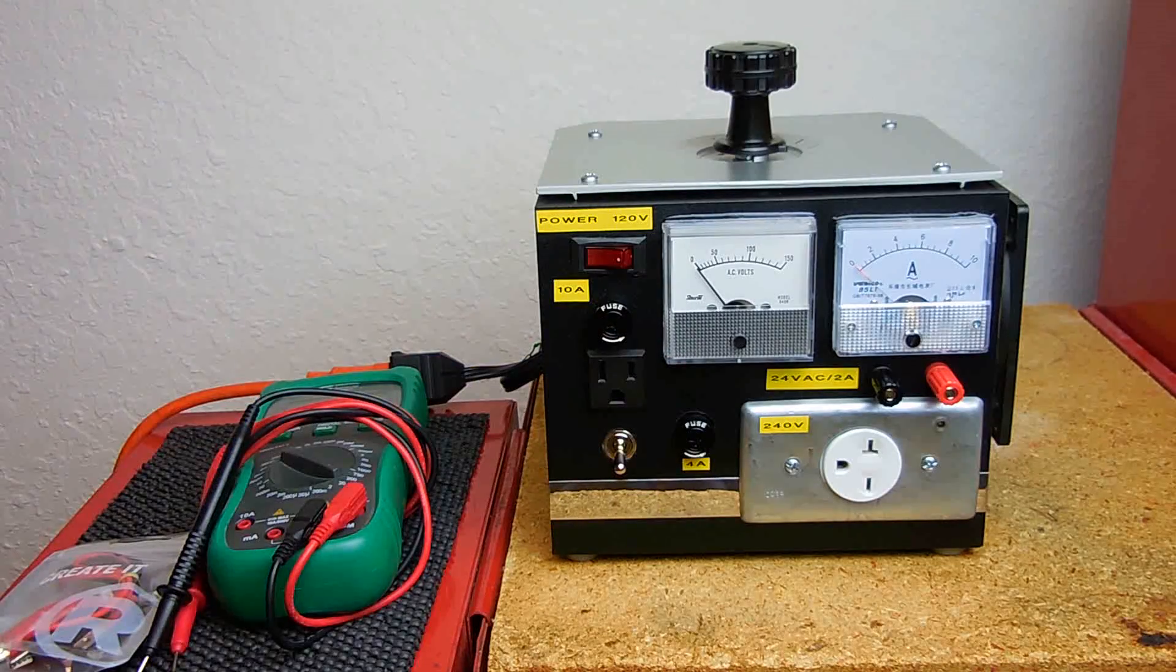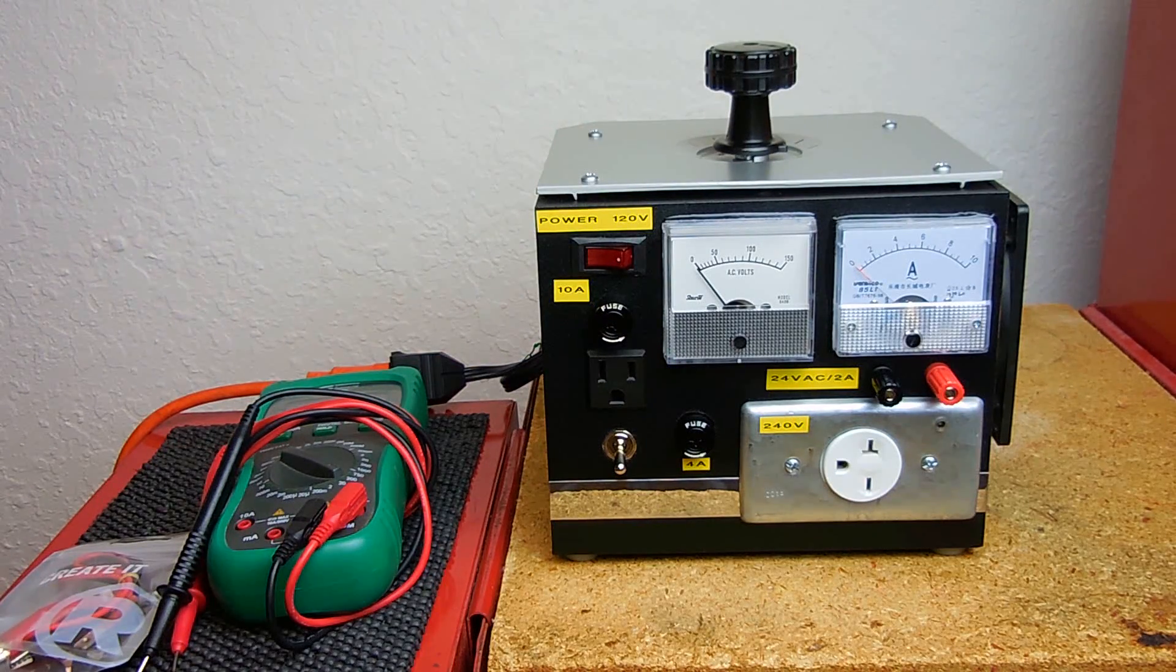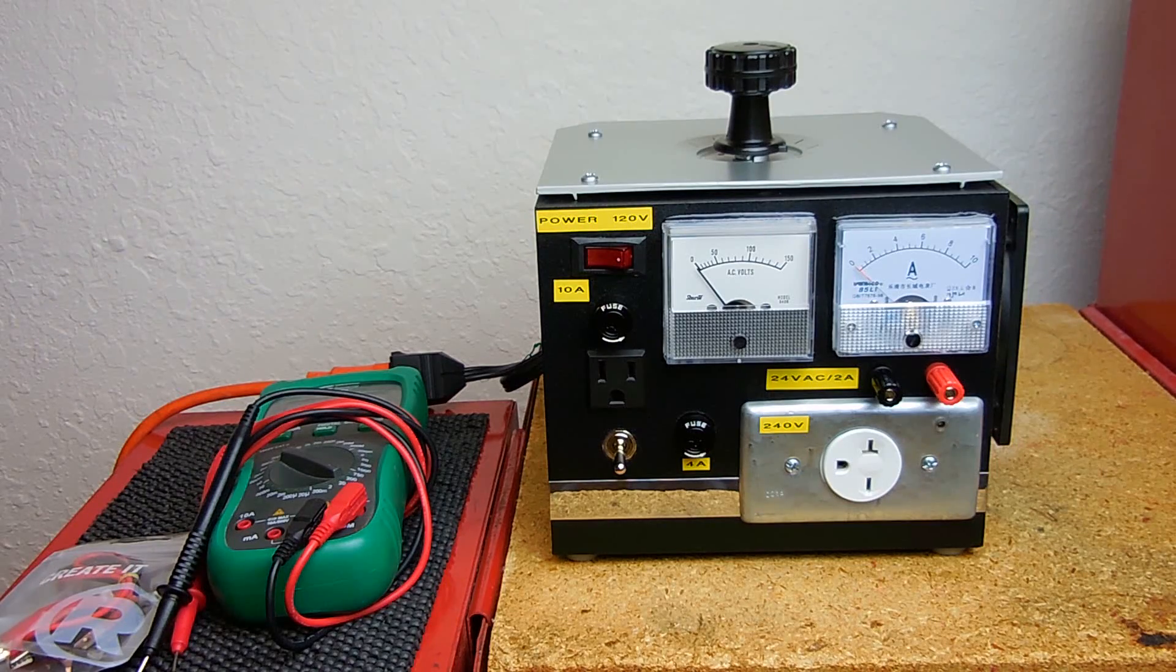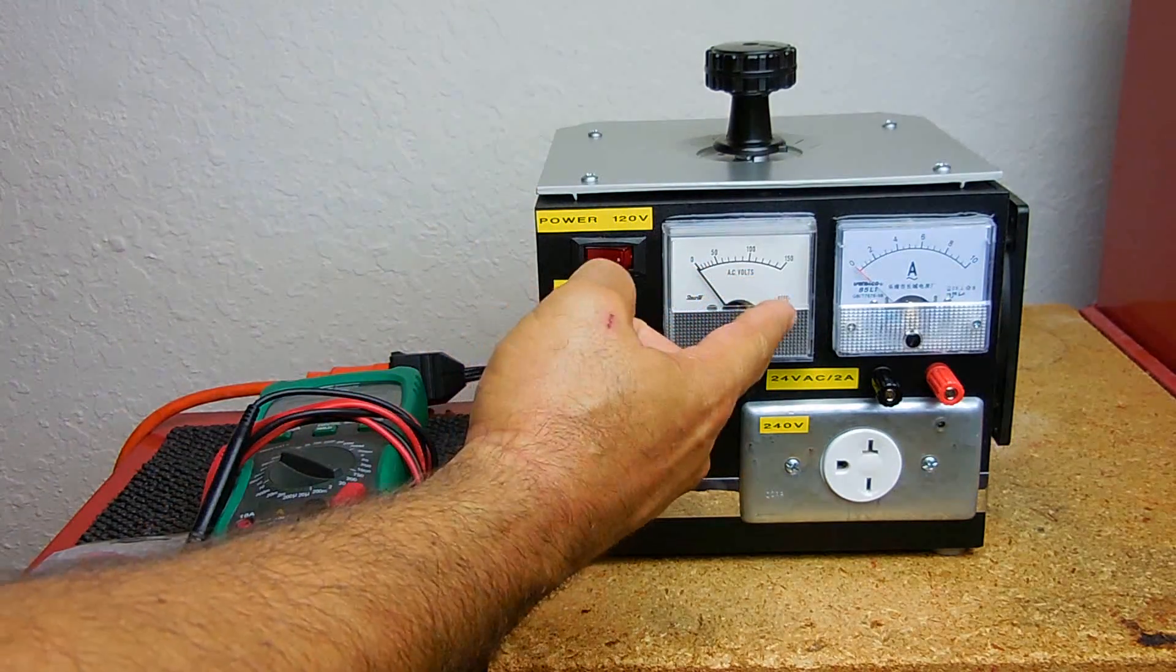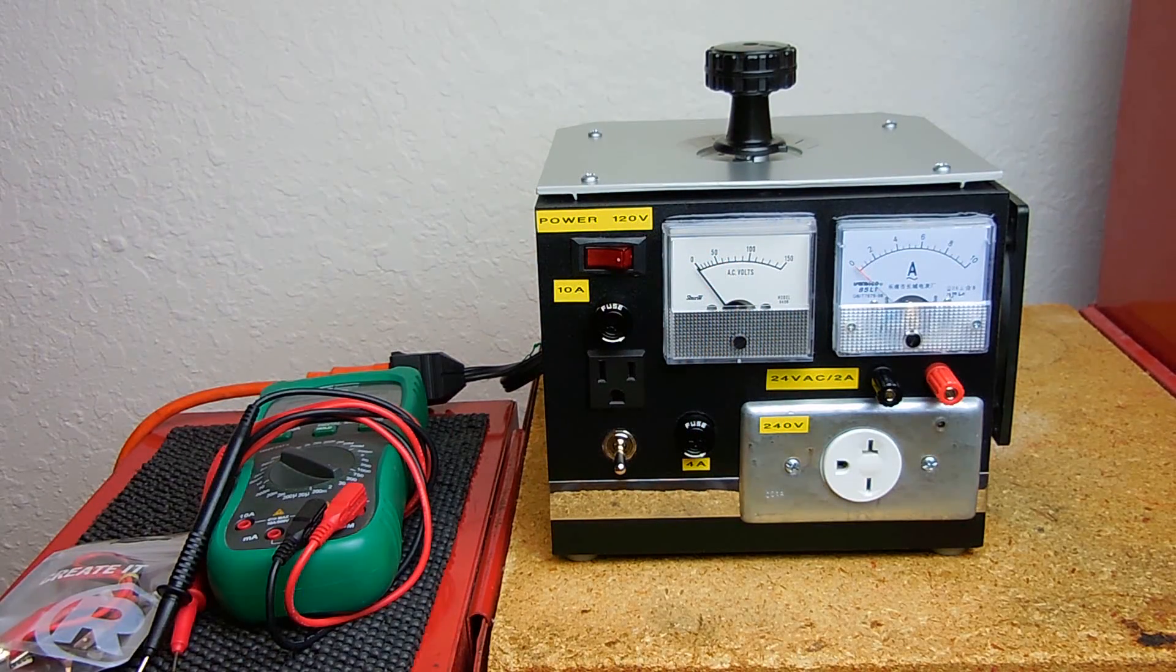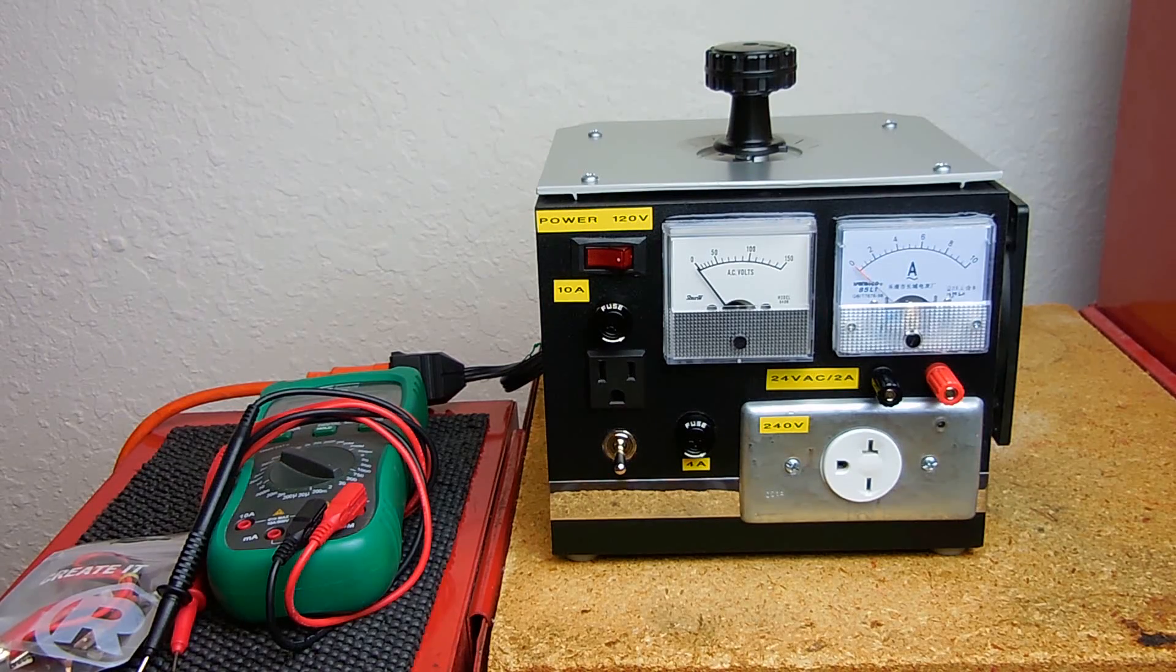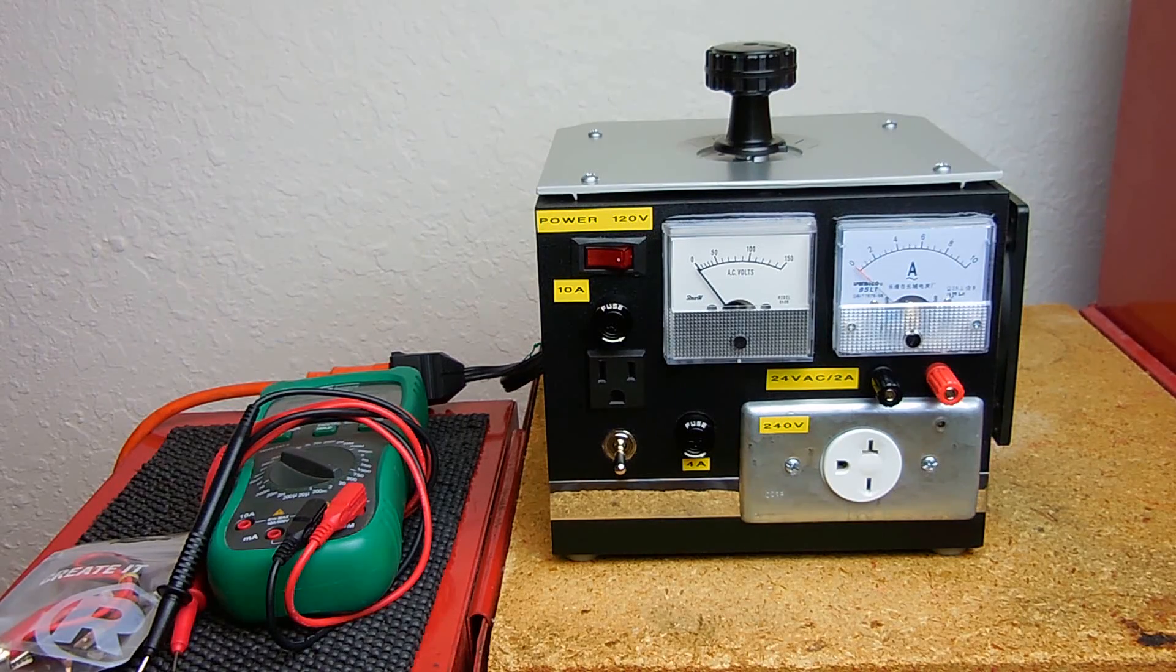So I found another way to be able to limit the current. If I need to work on something that operates at 120 volts and there's an issue with it where something is overheating, by using the setup here I'll be able to limit the current. I could bring it way down so if I want to check out a power supply board or anything else operating at 120 volts, I can keep the current extremely low to help pinpoint problems with certain things.